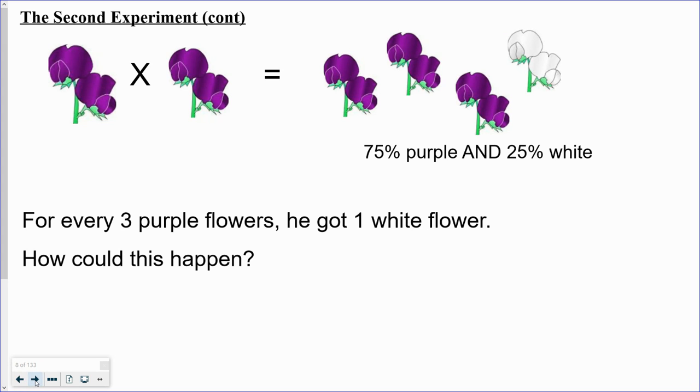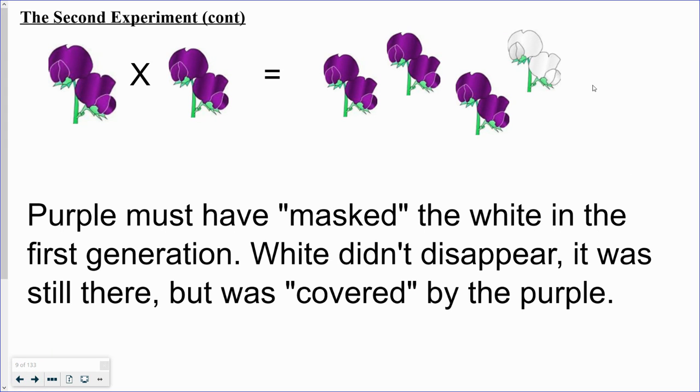So how did this happen? Well somehow the white must have been masked or covered in these offspring, and when those offspring were bred together we finally saw the white come out. It didn't disappear, it was kind of covered.